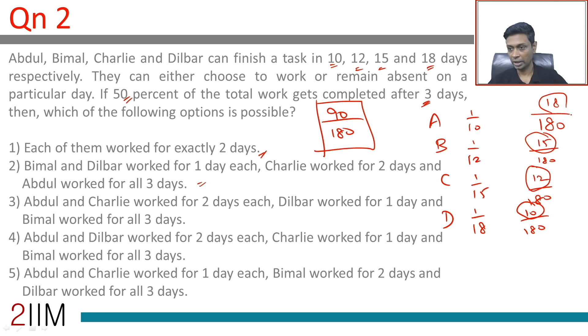Each of them work for 2 days. 18 plus 15, 33 plus 12, 45 plus 10, 55 into 2, that doesn't work, that's not 90.